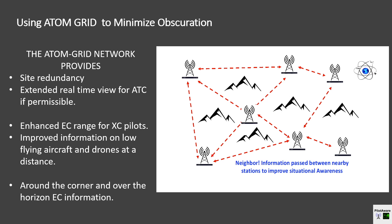The more stations that are installed will obviously provide sight redundancy and network resilience. By connecting all stations together via fast internet, data can be interchanged between stations to increase visual range and reduce obscuration. All ATOM grid stations are equipped with software to provide cooperative interactions between local stations — we call this PilotAware Neighbour. Assume an aircraft takes off from Airfield A, is picked up by its ATOM grid base station as it climbs out en route, identified by its unique ICAO code. In mountains or hills, if flying low, after a while the aircraft may be obscured from station A and its location lost.